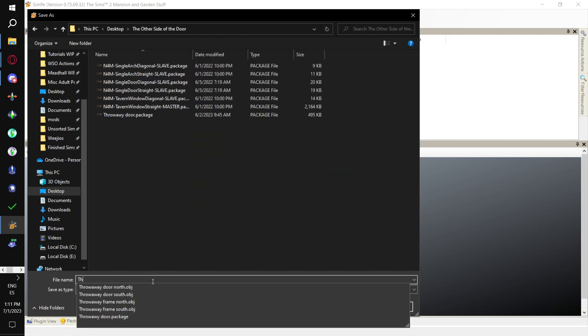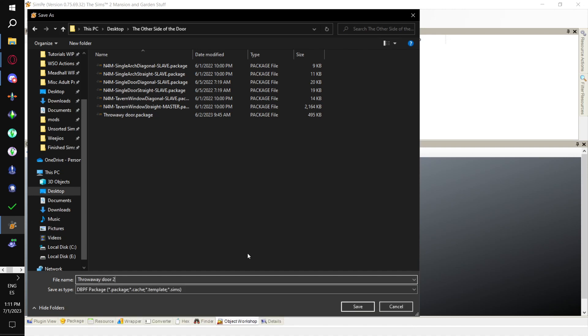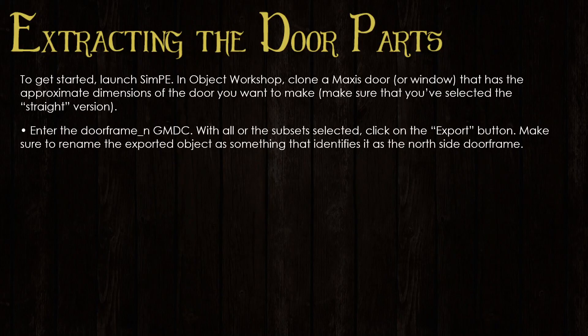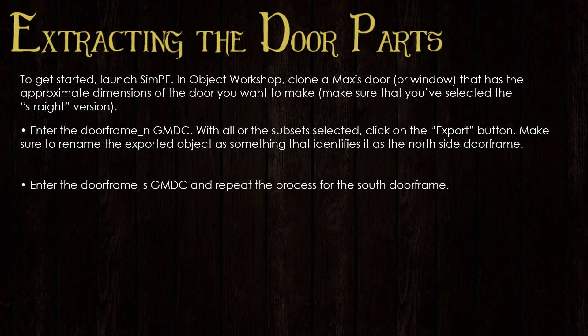I'm going to call it Throwaway Door. There's already one, so I'm just going to name this one Two. Next, we enter the doorframe North GMDC. With all of the subsets selected, we export the selection and rename it something that identifies it as the north side doorframe. It doesn't super matter because we're going to use this as a template to build our door.